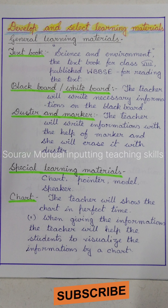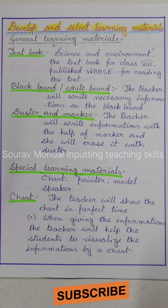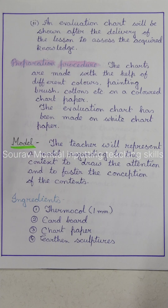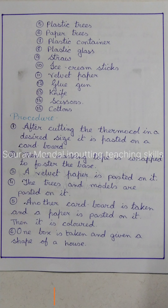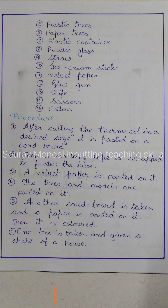Here I mentioned some questions regarding the learners' previous knowledge. The next step is Develop and Select Learning Materials, where I mentioned some general learning materials like textbook, chalk, duster, pointer, blackboard, and whiteboard. I also mentioned some special learning materials like chart and model, along with the procedure and ingredients.